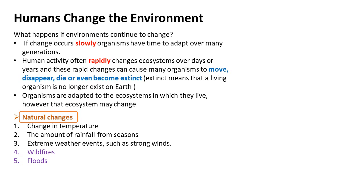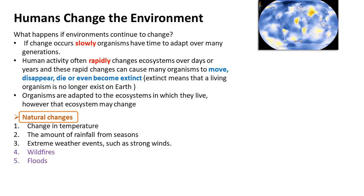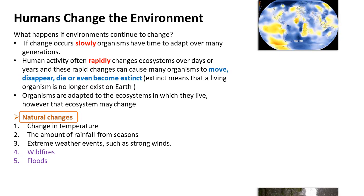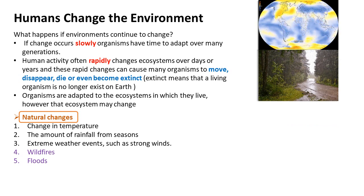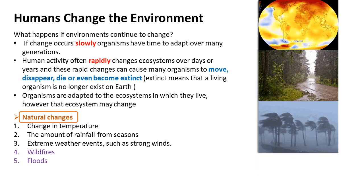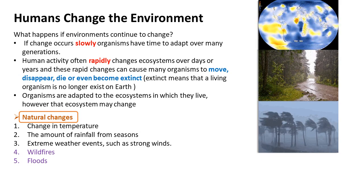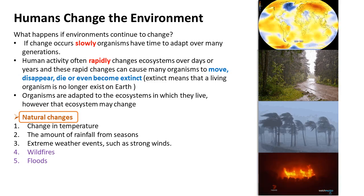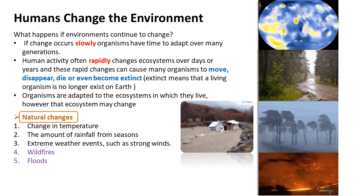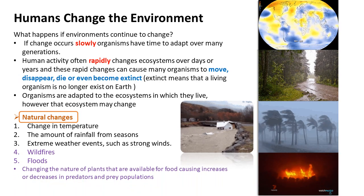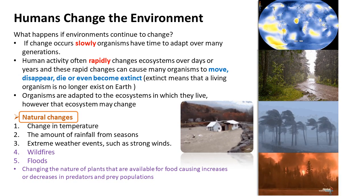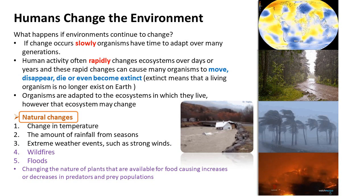Natural changes include: change in temperature over time; the amount of rainfall from seasons; extreme weather events such as strong winds; wildfires; and floods. These changes affect the nature of plants available for food, causing increases or decreases in predator and prey populations.